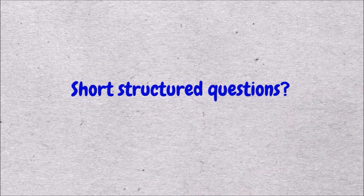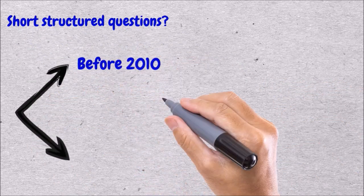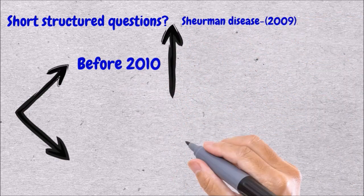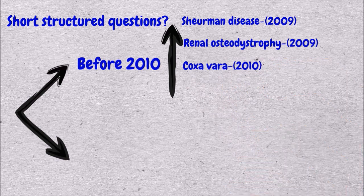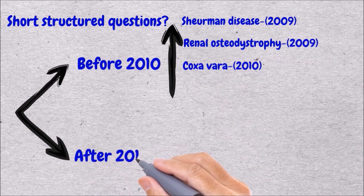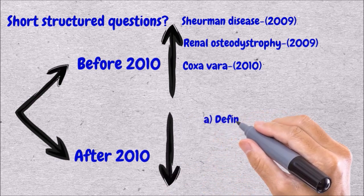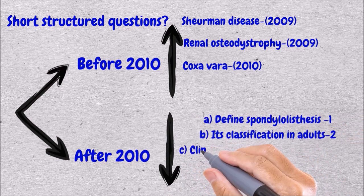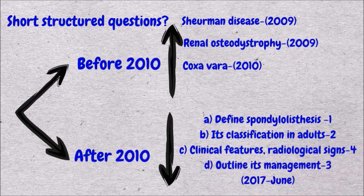So what are these short structured questions? If you go through papers before 2010, the questions were mostly direct one-liners like Scheuermann's disease or renal osteodystrophy. But the trend totally changed after 2010, wherein each question is divided into multiple parts with separate allotment of marks. This is advantageous in terms of scoring marks as well as time management.